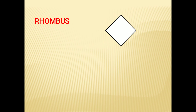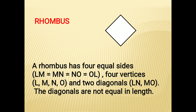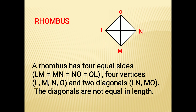The next shape is the rhombus. This is a rhombus. A rhombus has four equal sides: LM, MN, NO, and OL. It has four vertices — L, M, N, and O — and two diagonals, LN and MO. The diagonals are not of equal length.